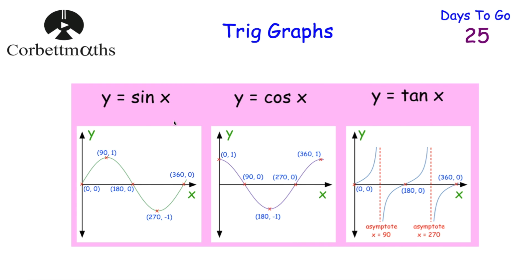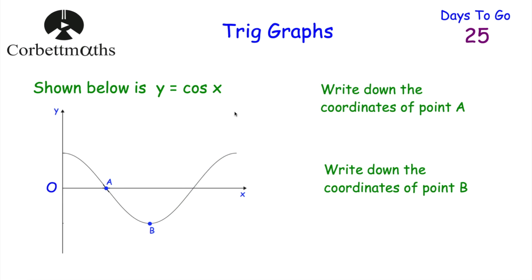So those are the graphs of the trigonometric functions: y equals sine x, y equals cos x, and y equals tan x. It's important to know the shapes of them, the key points on them, and to be able to recognize each one. Now let's have a look at a question for you to try. Here we've got the graph of y equals cos x. Can you write down the coordinates of point A and the coordinates of point B? Press pause now to work that out.